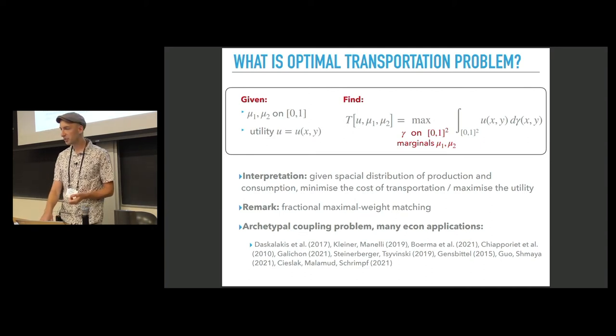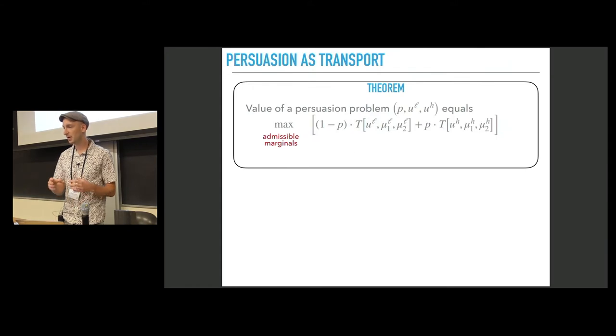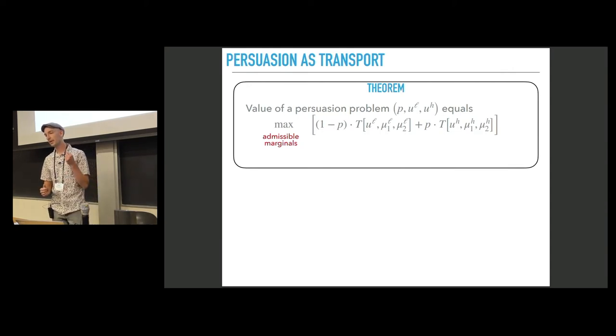So how does optimal transportation enter multi-receiver persuasion? We obtain the following theorem. First of all, we allow for the sender's utility function to depend on the state. So now he has two utilities, ul and uh, in both of the states.